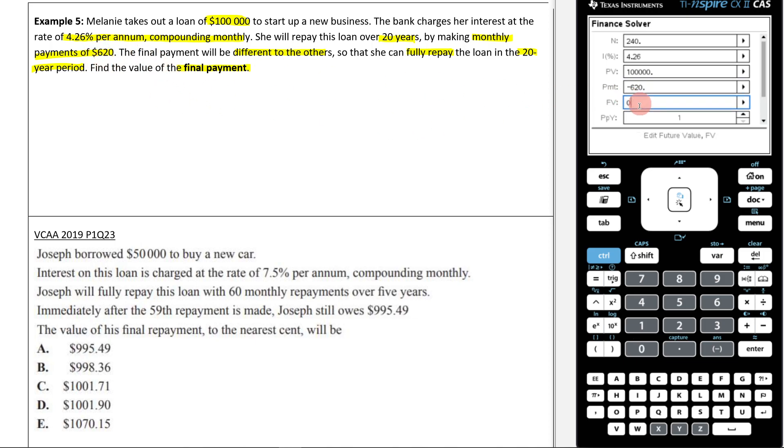My future value is the thing I'm going to try to solve for. What is going to be the balance of my loan after making all of these payments? And then, of course, we come down to PPY and CPY, both of which are going to be 12 because it's compounding monthly. Now, I'm going to end up with $87.62. Now, what does this mean?